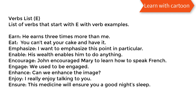Verbs list E. List of verbs that start with E with verb examples. Earn: he earns three times more than me. Eat: you can't eat your cake and have it. Emphasize: I want to emphasize this point in particular. Enable: his wealth enables him to do anything. Encourage: John encouraged Mary to learn how to speak French. Engage: we used to be engaged. Enhance: can we enhance the image?